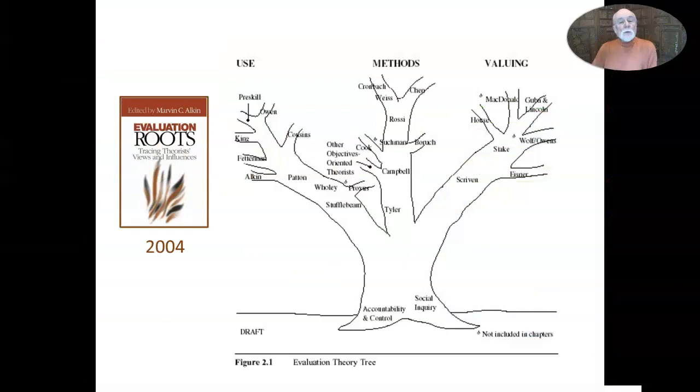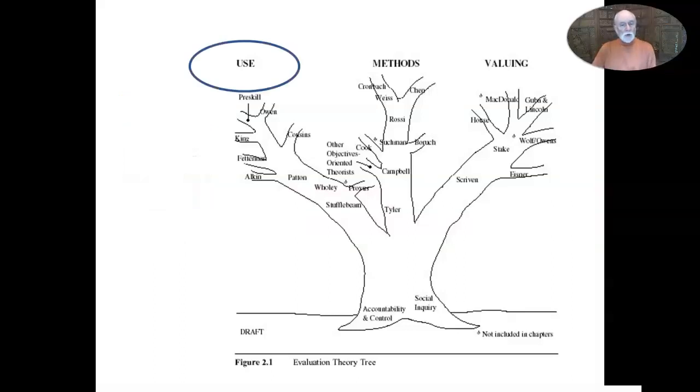This is the first version of the theory tree, which placed theorists on one of three branches: the use branch, the methods branch, or the valuing branch.